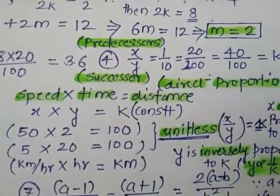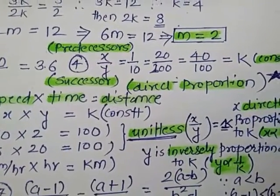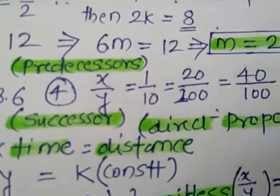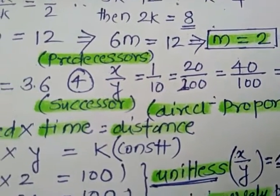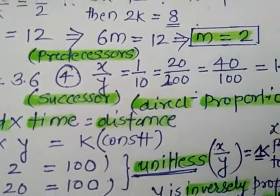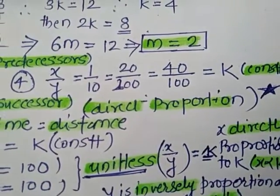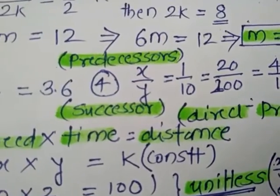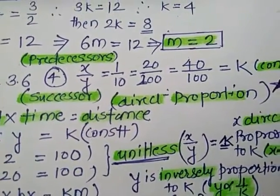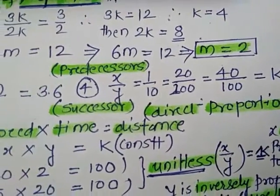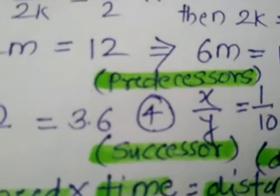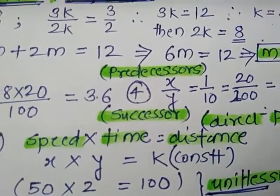In direct proportion, X divided by Y is equal to 1/10, 20/200, 40/400, all equal to K, that is a constant. The whole ratio is a constant number, so this is direct proportion. X is known as the predecessor and Y is known as the successor.